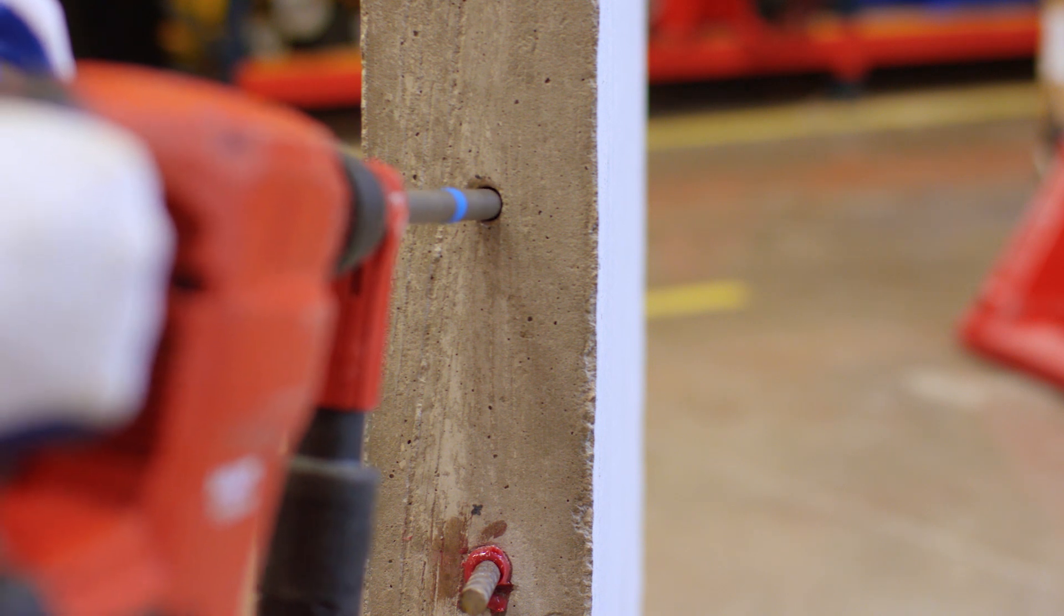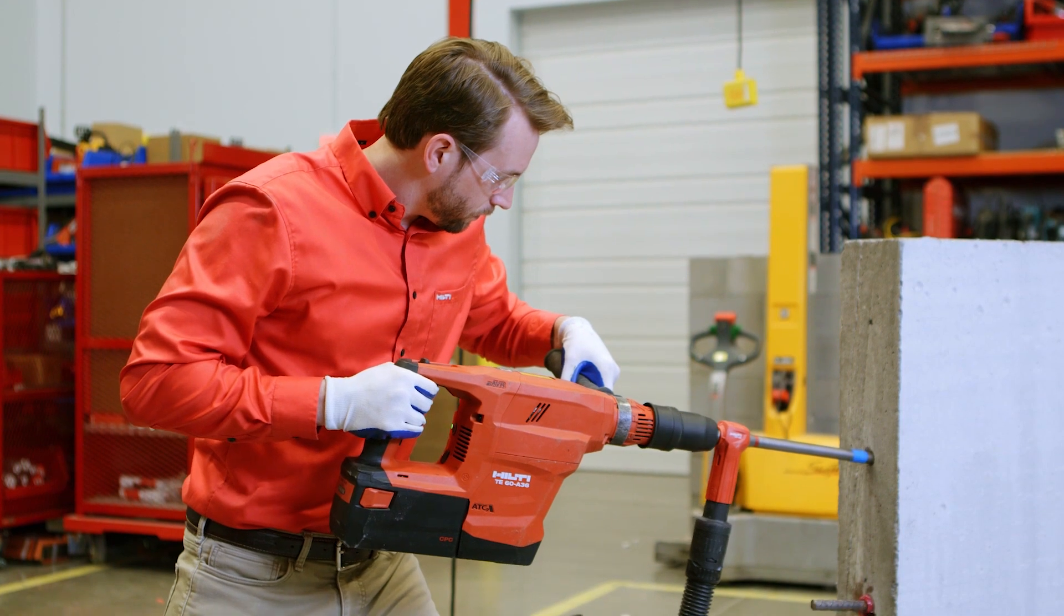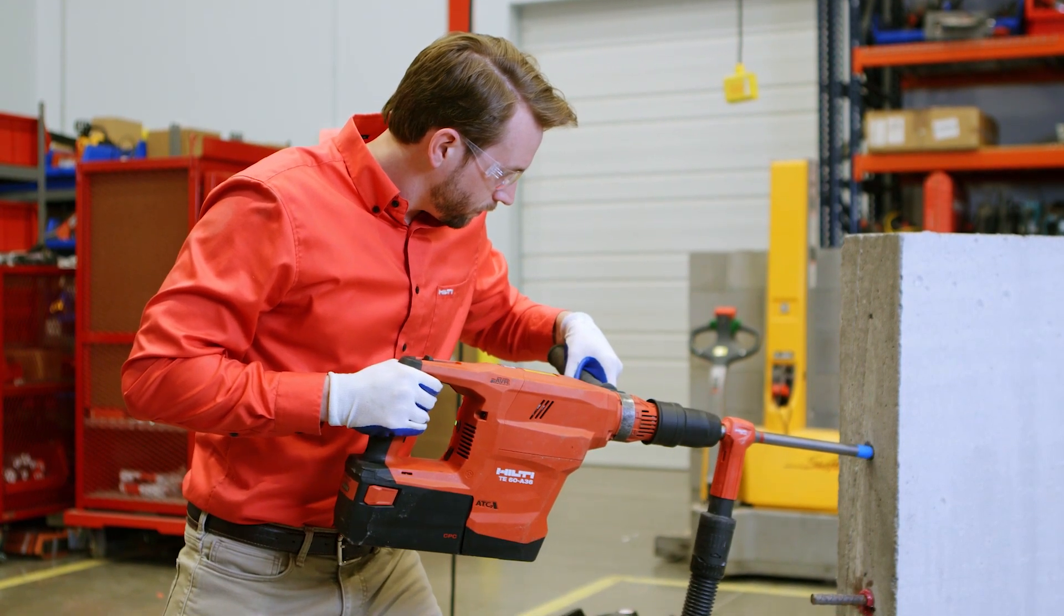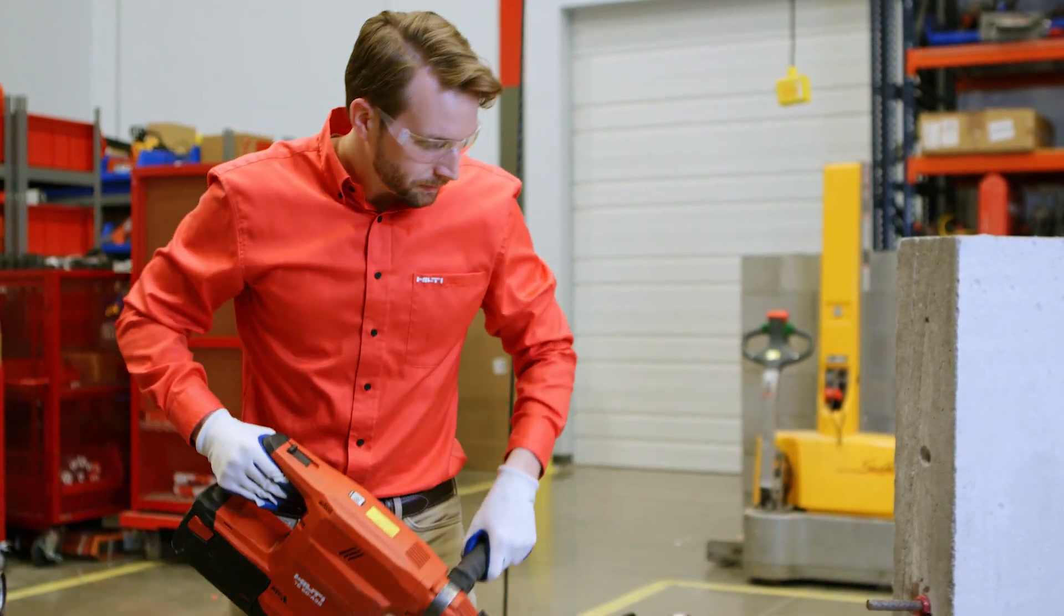To help ensure proper bonding between the rebar and the base material, Hilti's safe-set system of installation can replace the 2x2x2 cleaning method because the hollow drill bit and Hilti vacuum automatically clean the hole while you drill.